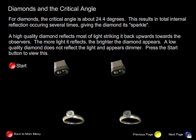Now a high quality diamond reflects most of the light striking it back upwards towards the observers. The more light it reflects, the brighter the diamond appears. A low quality diamond does not reflect the light and appears dimmer. So here we have two light sources on two diamonds. Let's take a look and see what happens.